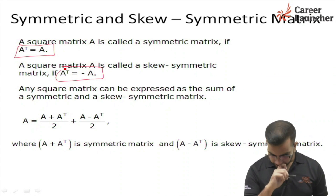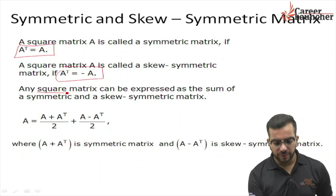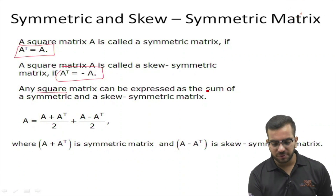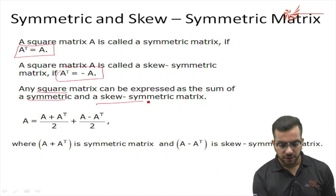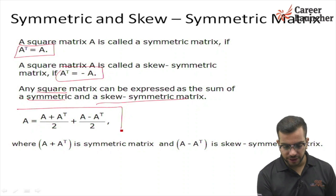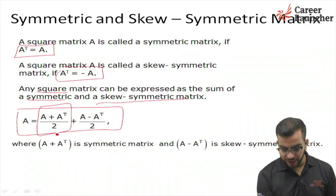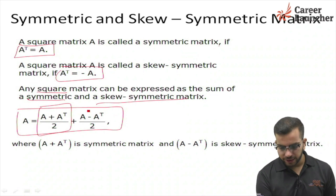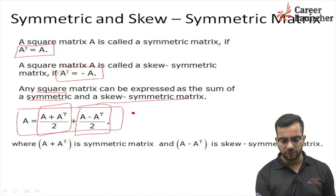Any square matrix can be expressed as a sum of a symmetric part plus a skew symmetric part. This is the symmetric part of matrix A and this is the skew symmetric part of matrix A.